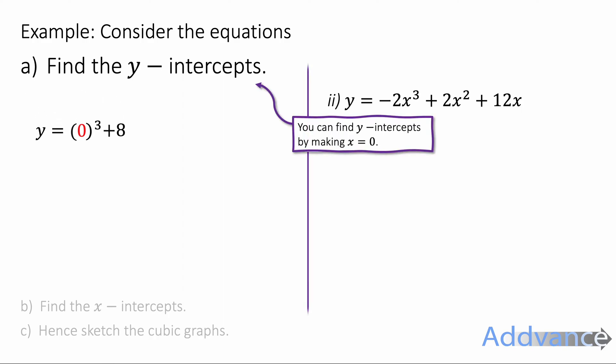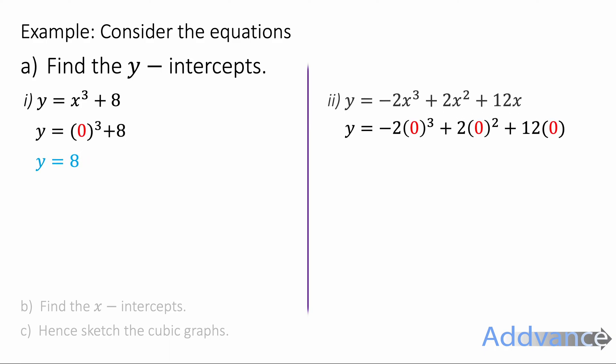This is easy because all we're going to do is substitute x = 0 into these equations. Here, I've put x is 0. I get 0³ + 8, which is just zero. So the y-intercept is 8.